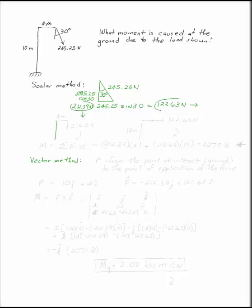Now, this component, the one that acts down, acts at a distance away from the ground, a perpendicular distance of 4 meters. The 122.63 newton load acts at a perpendicular distance of 10 meters. This one, the 212 will tend to spin the ground clockwise. The 122 will also tend to spin the ground clockwise. So the moment is going to be the sum of the forces times their perpendicular distances, which is 212.39 times 4 plus 122.63 times 10. It's 2,075.8.